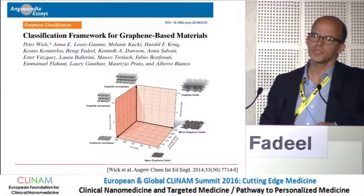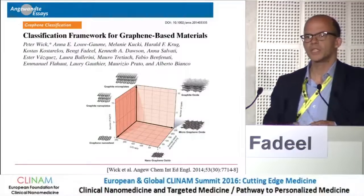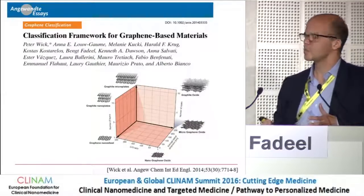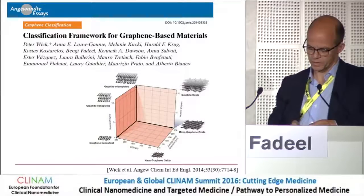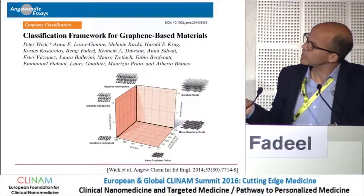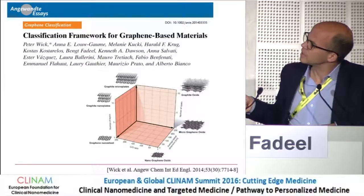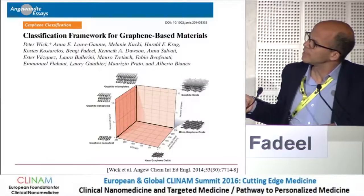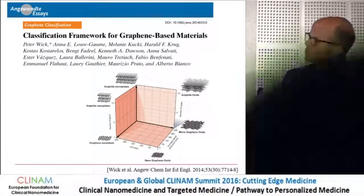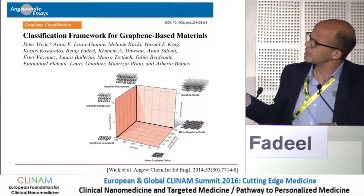At the very beginning of the flagship project, we published a paper in Angewandte Chemie where we tried to develop a classification scheme for graphene-based materials, in order to guide our toxicological studies and allow us to do those studies in a more systematic manner. Briefly, we are looking at three parameters: the number of layers, the average lateral dimensions from nano to micron size, and the carbon-to-oxygen ratio. Today I'm going to discuss graphene oxides of small or large lateral dimensions and compare these two.